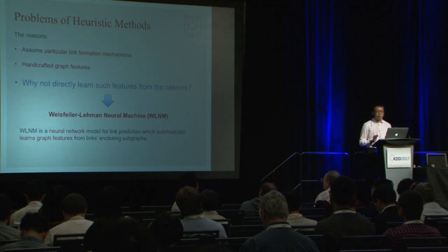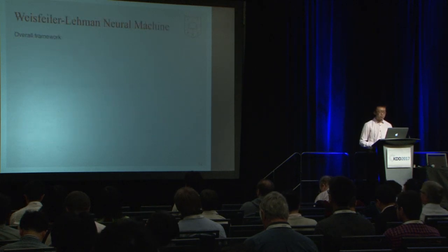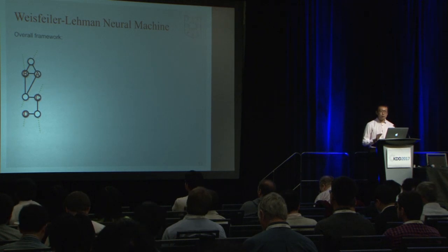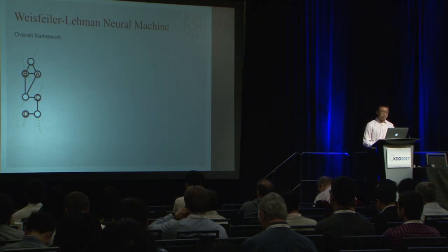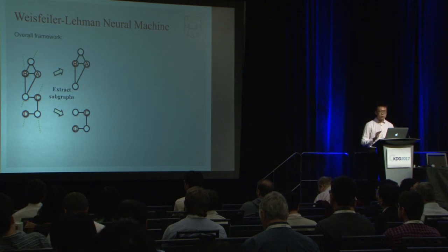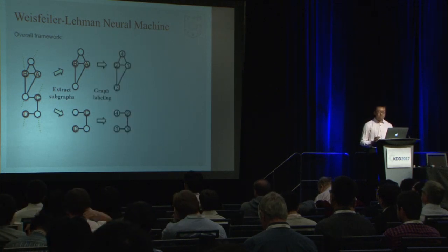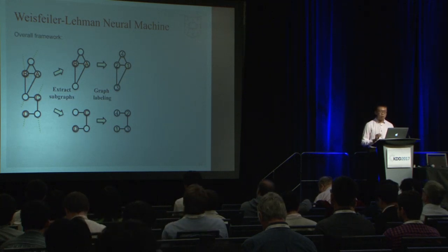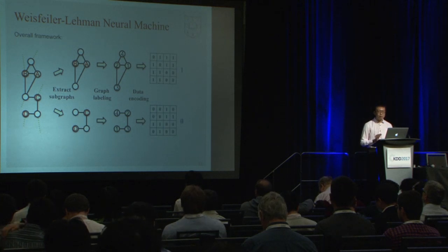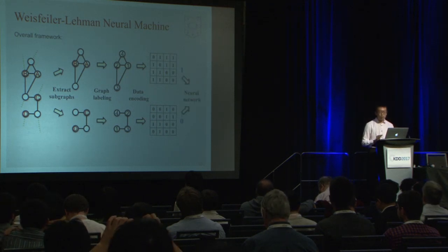The inconsistent performance of heuristic methods stems from their assumption of particular link formation mechanisms, essentially using handcrafted graph features. This motivates the question: can we directly learn such graph features from the network itself? This leads to the proposed Weissfeller-Lehmann Neural Machine (WLNM), a neural network model for link prediction that automatically learns graph features from links' enclosing subgraphs. This figure illustrates the overall framework: given a network, it samples positive and negative training links, extracts a local neighborhood subgraph for each link, applies graph labeling, constructs an adjacency matrix, and feeds it into a neural network.